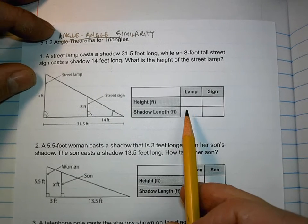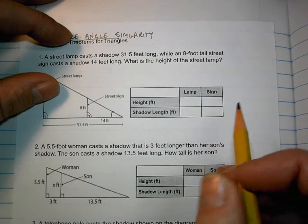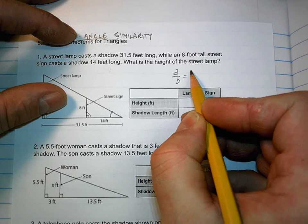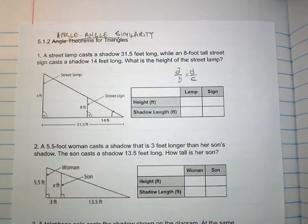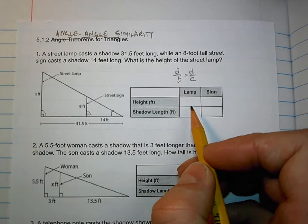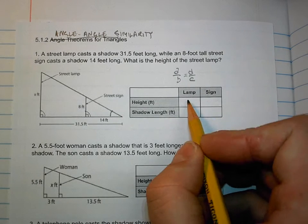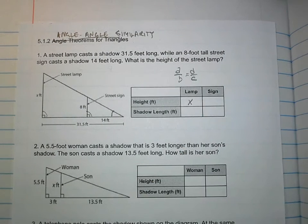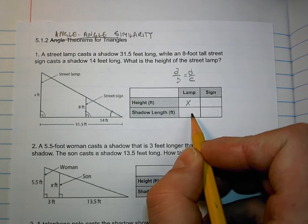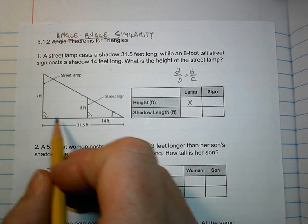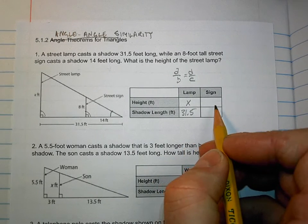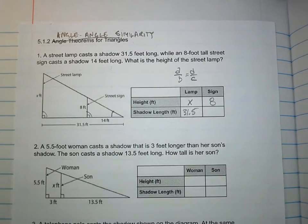So let's fill in the table. I made a table. We do this all the time, and you've seen it all the time, is one fraction like AB equals DC. It's a proportion. So let's fill in. What's the height of the lamp? It's unknown, isn't it? Yes. Okay, what's the shadow length of the lamp? 31.5. What's the height of the sign? 8 feet. And what's the length of the shadow of the sign? 14 feet.